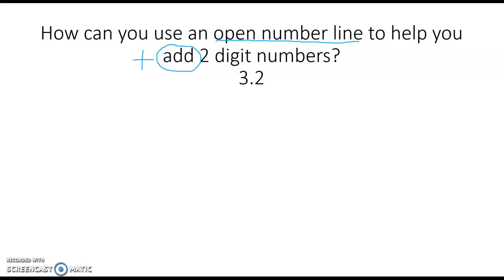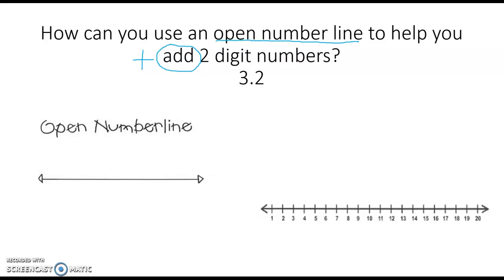You know that a number line is a line that shows numbers in order from least to greatest. An open number line doesn't have any numbers on it. You write the numbers on the open number line that you need, and it's a good way to visually add and see your steps for adding the two-digit numbers.